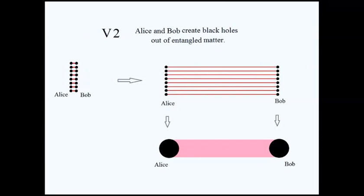And then Bob puts his half, his share, in his pocket. Alice puts her share in her pocket. And they walk far away from each other. So they're very far away from each other. That's the next picture over there. They're not stretching anything. Those lines are just showing that they're entangled, far away from each other, and then take their particles and collapse them into black holes. The result is two entangled black holes.